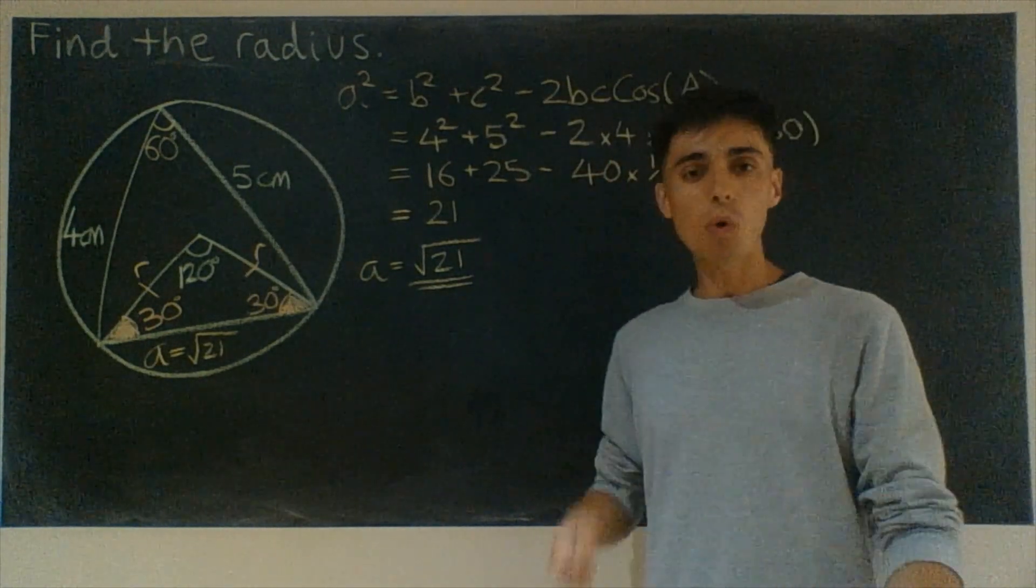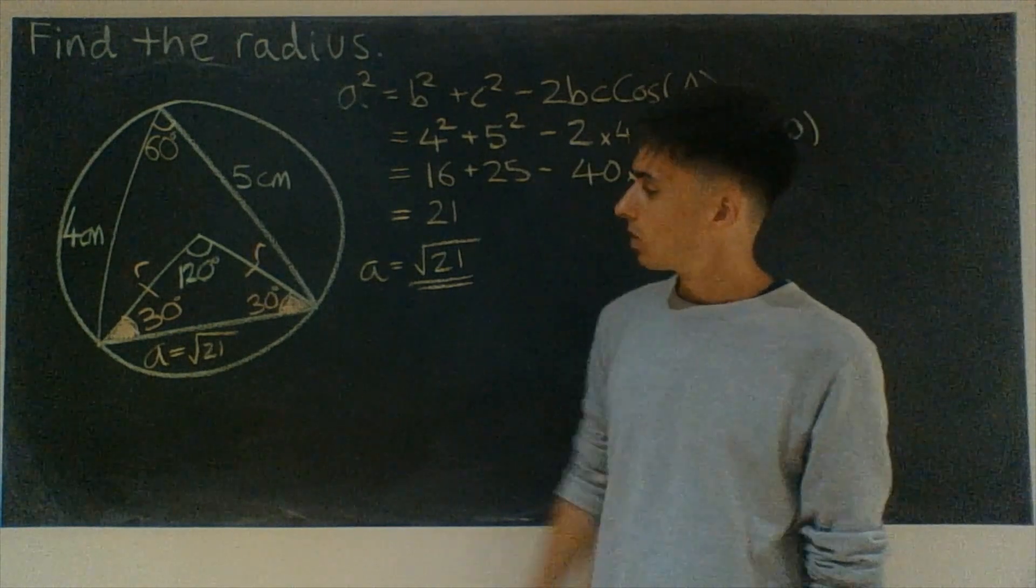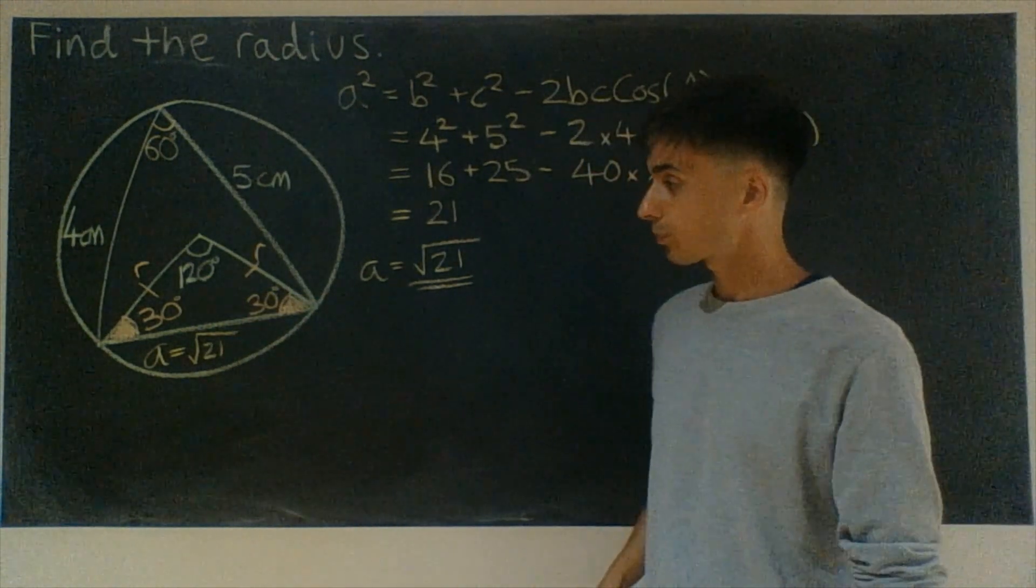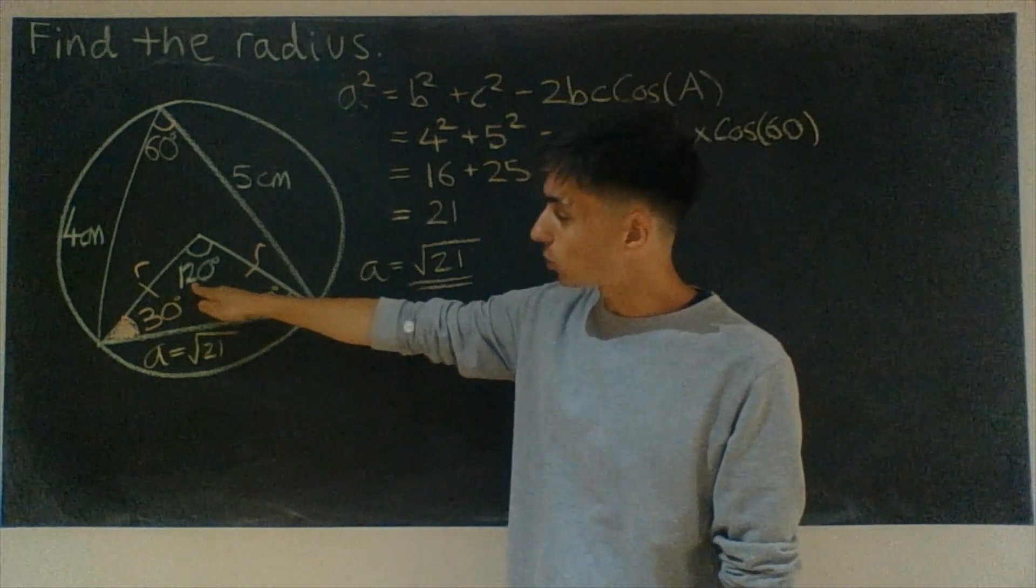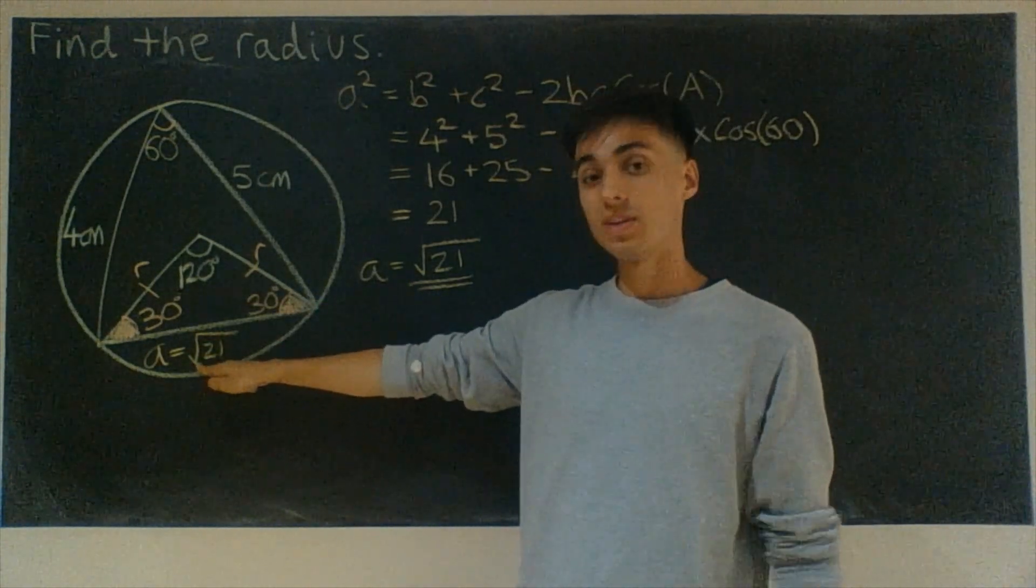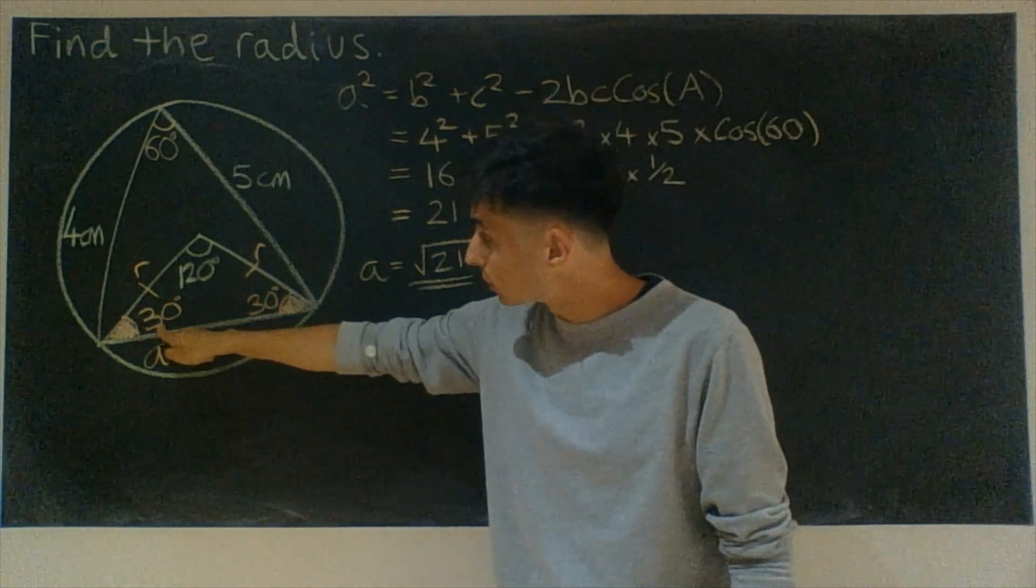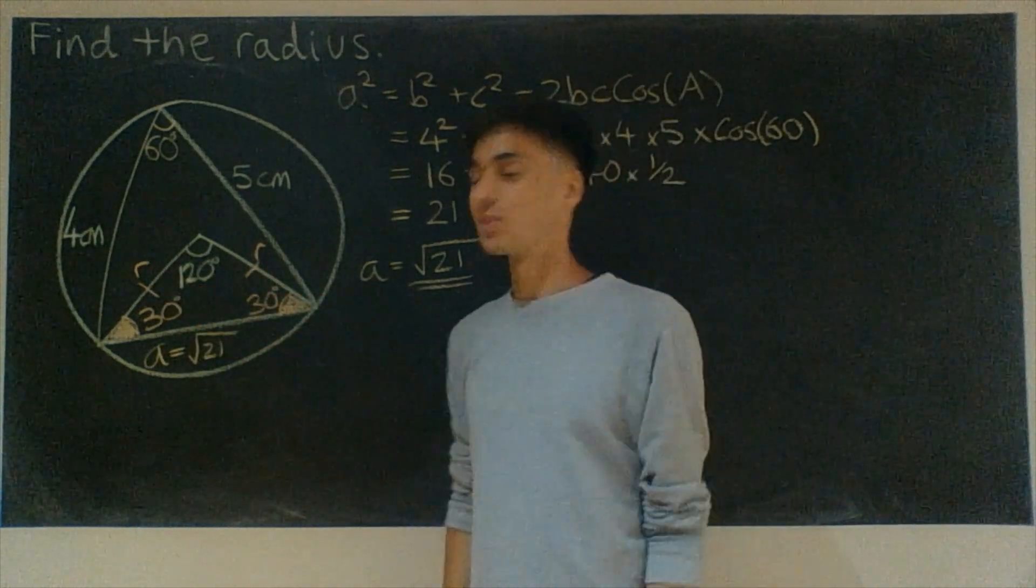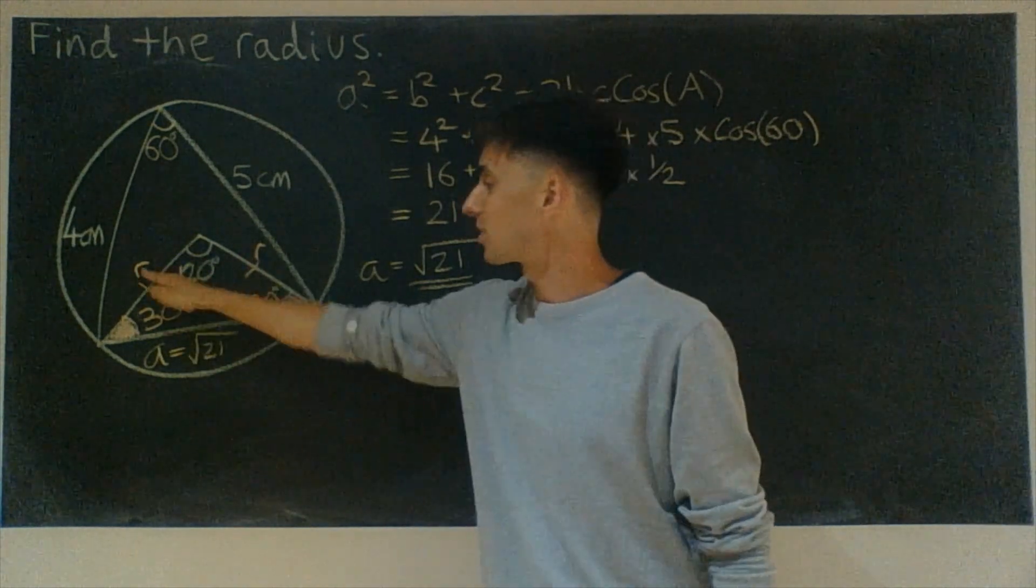Okay, we're almost there then at this point. What we can do to finish off is use the sine rule because we've got an angle and its opposite side. And now we also have another angle and its opposite side.